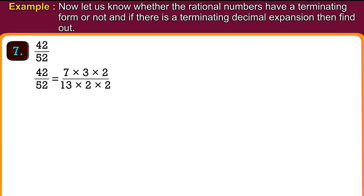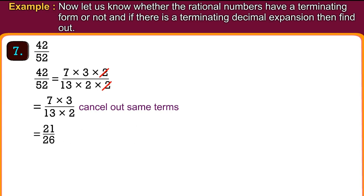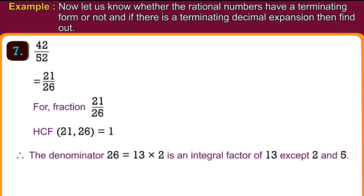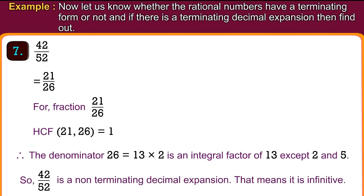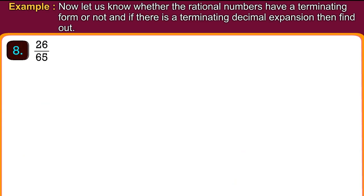Number 7: 42 upon 52. 42 upon 52 equals 7 into 3 into 2 upon 13 into 2 into 2. Cancelling common terms gives 21 upon 26. For the fraction 21 upon 26, the highest common factor of 21 and 26 is 1. The denominator 26 equals 13 into 2, which has a prime factor of 13 other than 2 and 5. So 42 upon 52 is a non-terminating decimal expansion, meaning it is infinite.